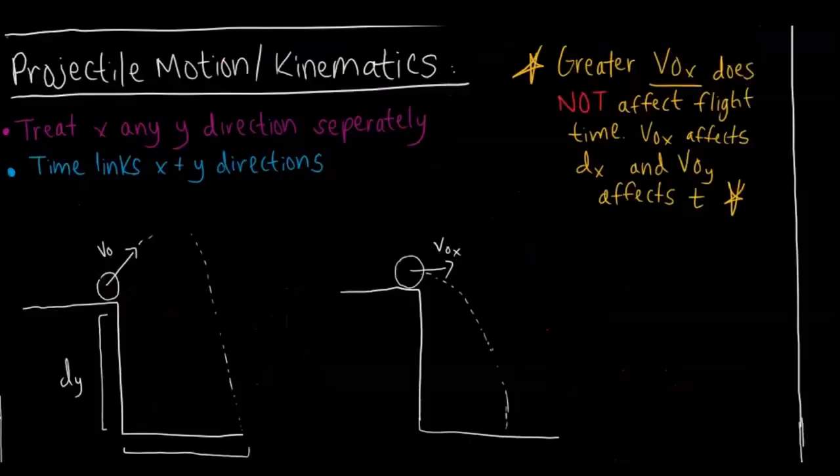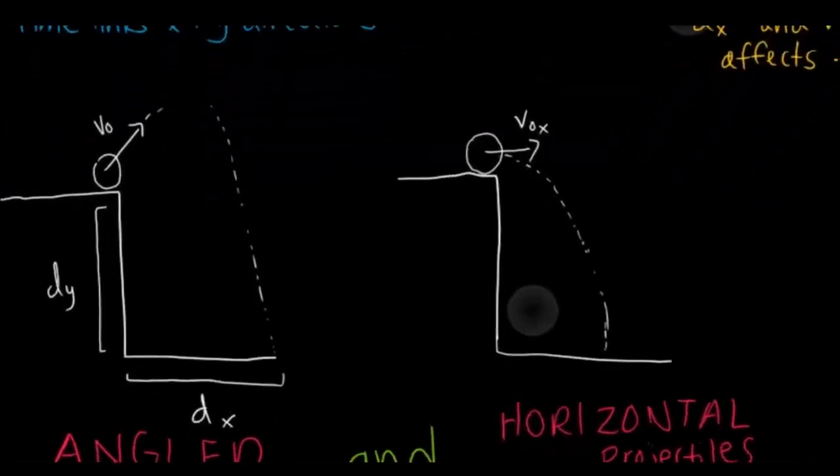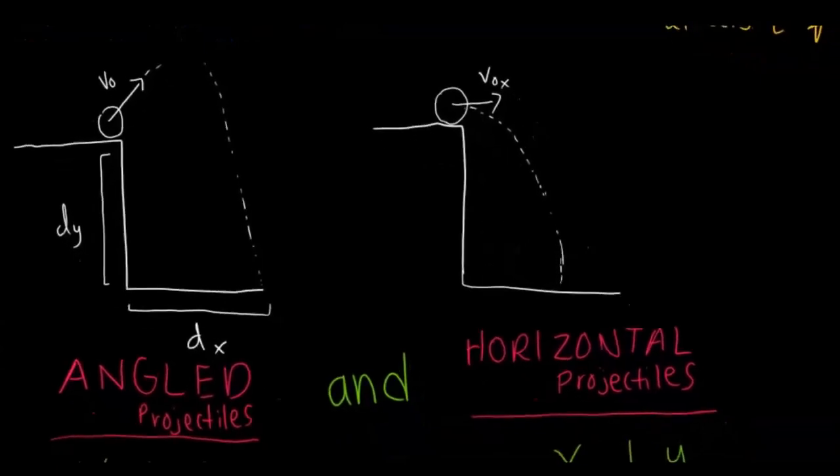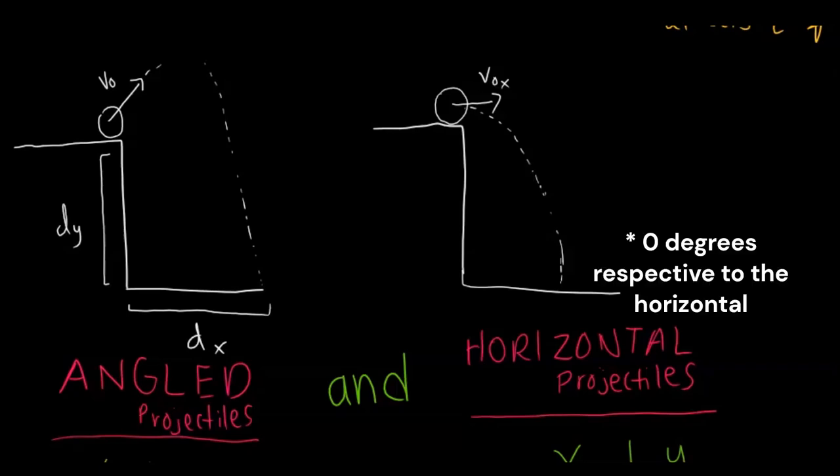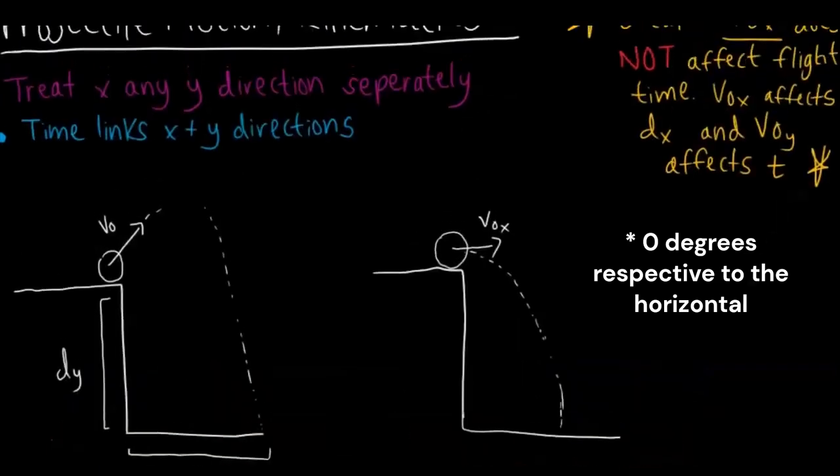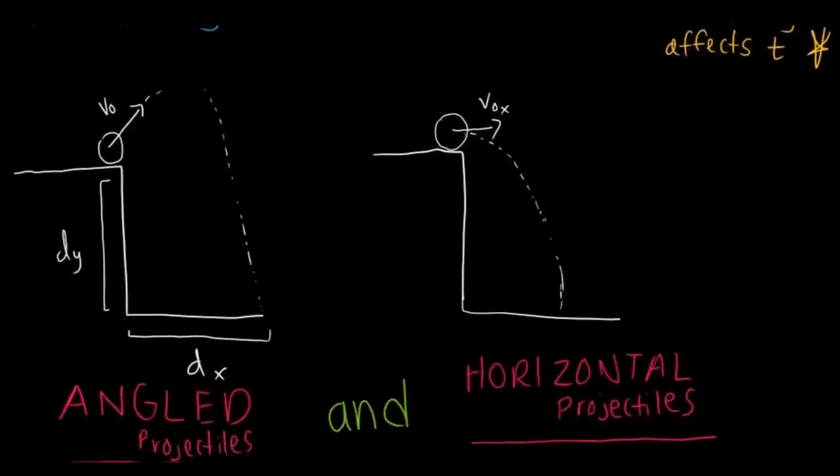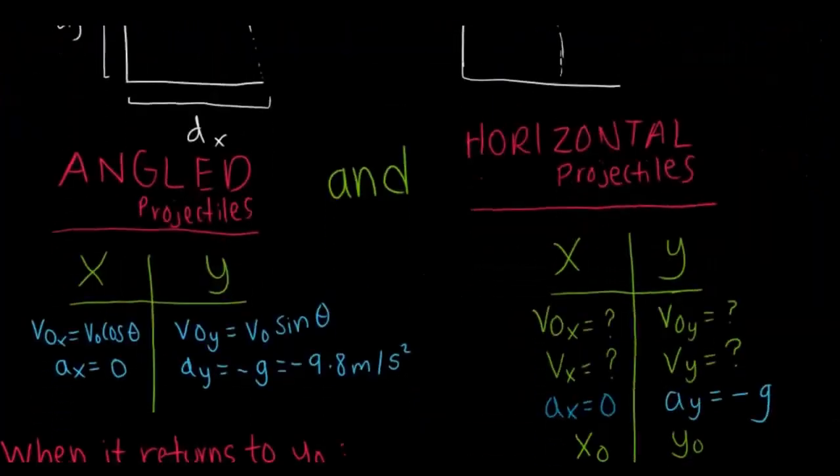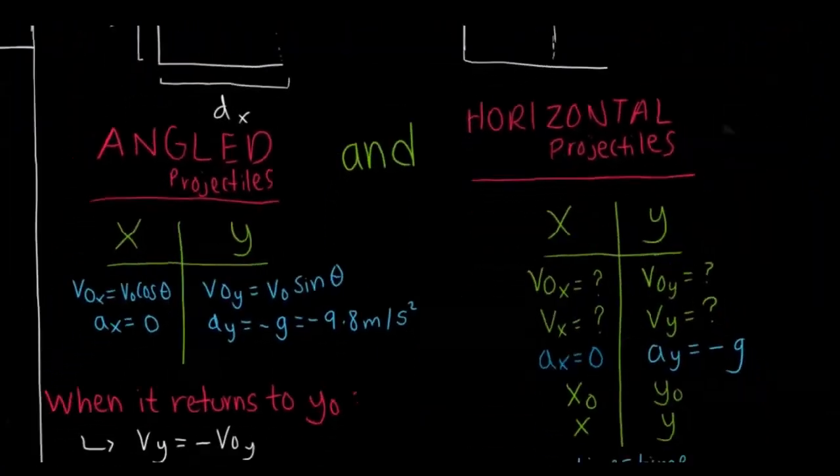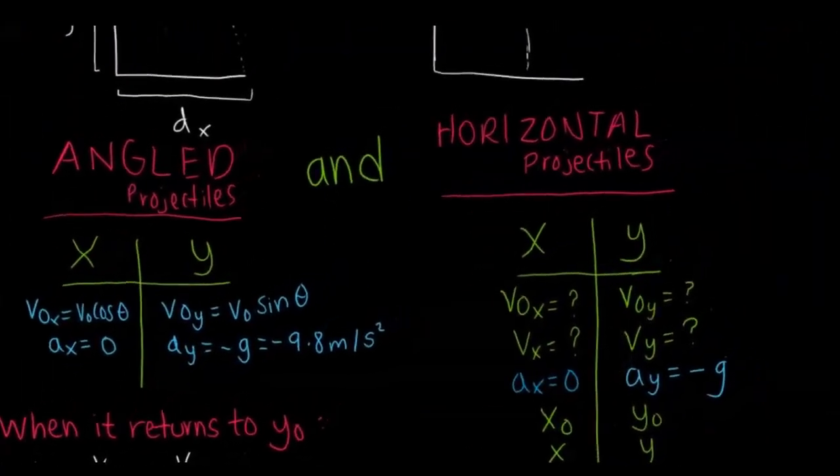The final thing we're going to cover is projectile motion in terms of kinematics. There are two types of projectiles: angled projectiles and horizontal projectiles. When it's angled, it's launched at an angle into the air. When it's horizontal, it's launched at 90 degrees flat given the initial velocity as well, and that initial velocity is going to act in the x direction.